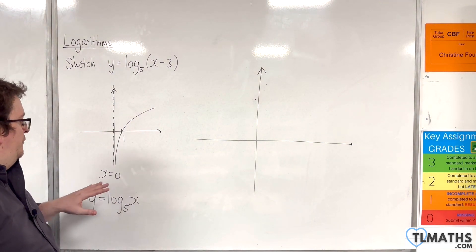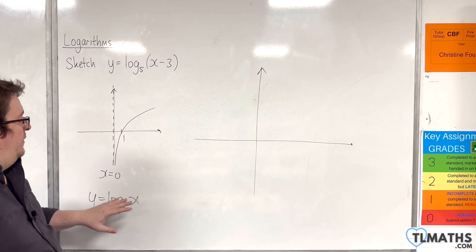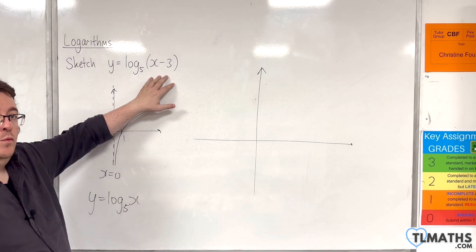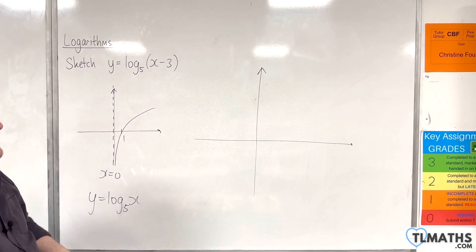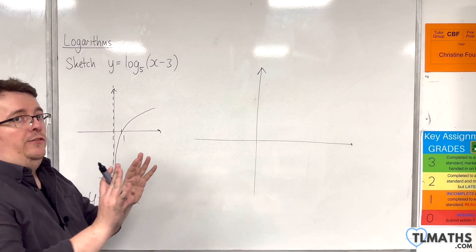Now what's happened from here to here is that the x is being replaced with x take away 3, and that is translating the graph 3 units to the right.